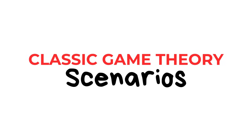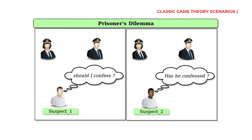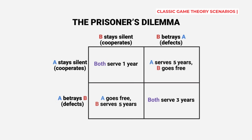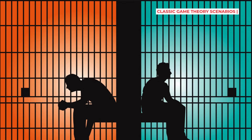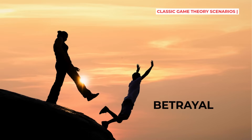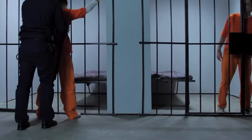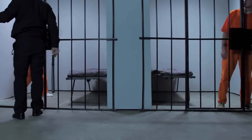Two criminals sit in separate interrogation rooms, each facing a life-changing choice: stay silent or betray their partner. If both stay silent, they each get just one year in prison. If both betray each other, they each get three years. But if one betrays while the other stays silent, the betrayer goes free and the silent one gets five years. This is the famous Prisoner's Dilemma, and it reveals something shocking: even though both would be better off staying silent, the temptation to betray is too powerful. Because no matter what your partner does, you always do better by betraying — so when both think this way, they both end up worse off.